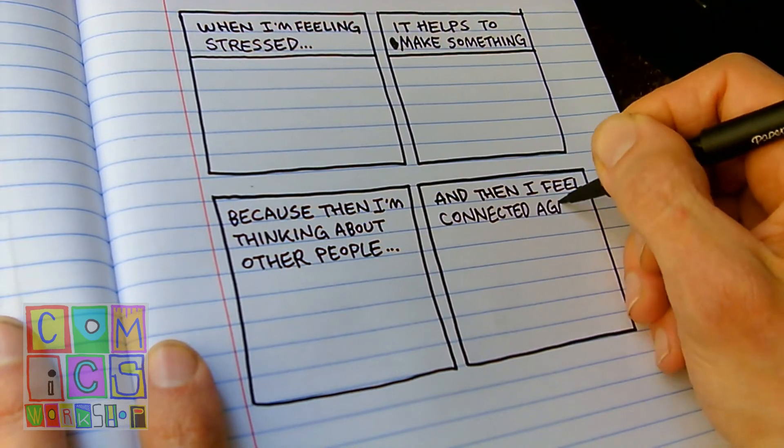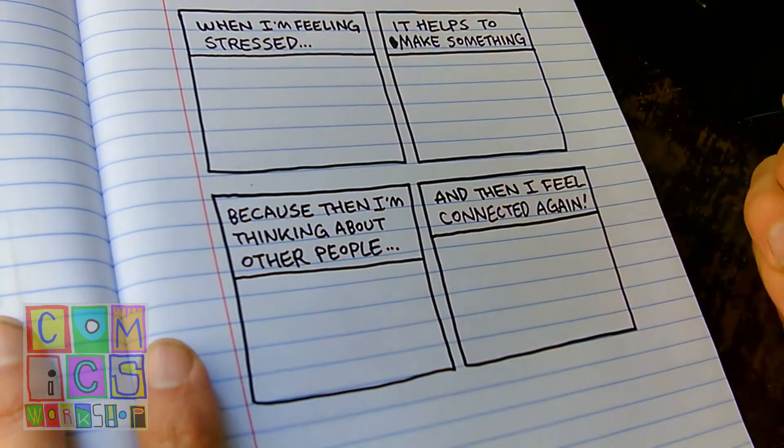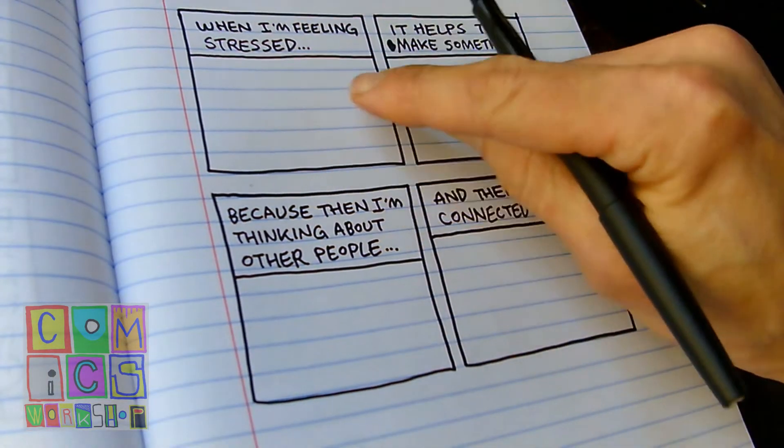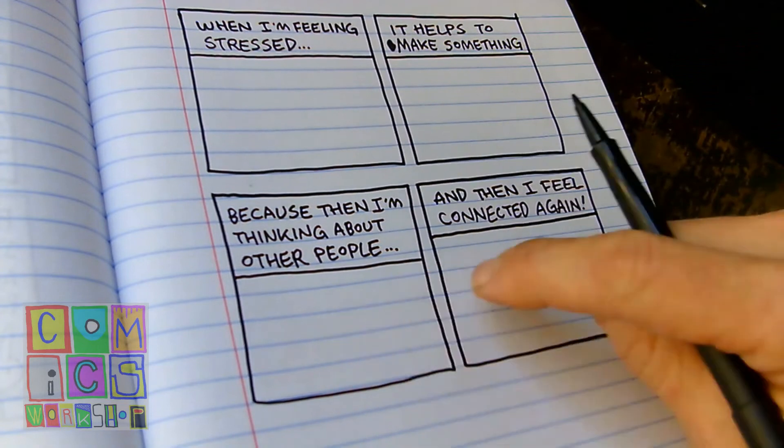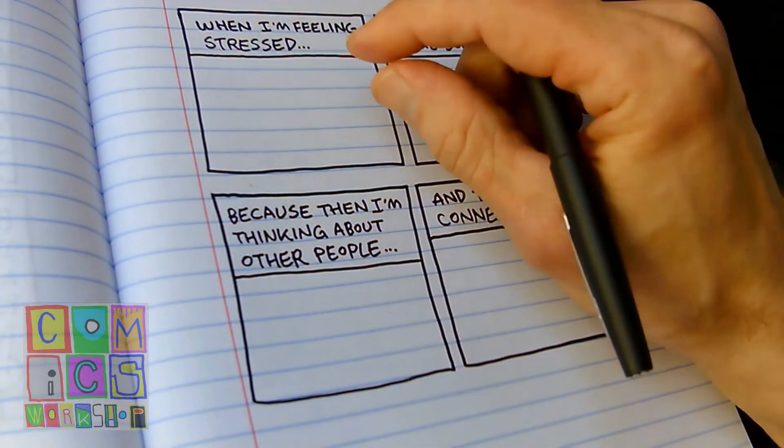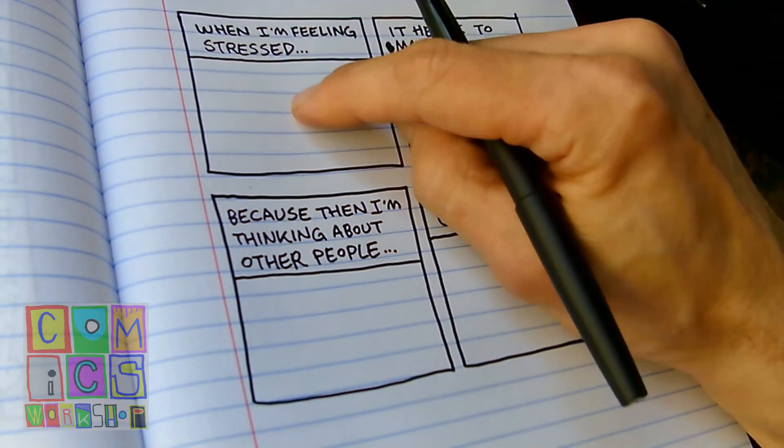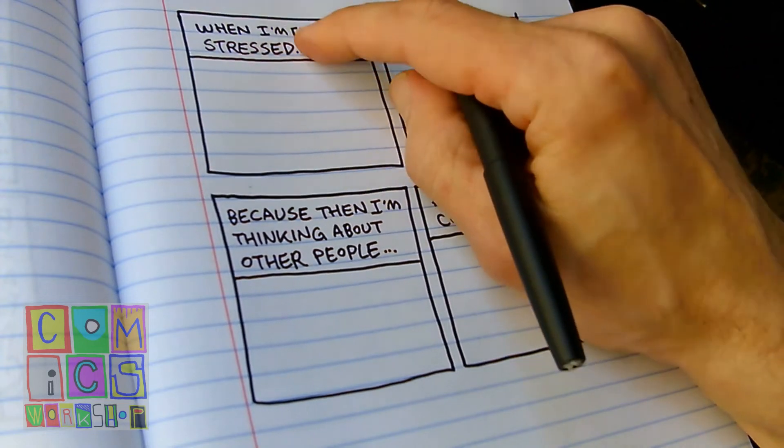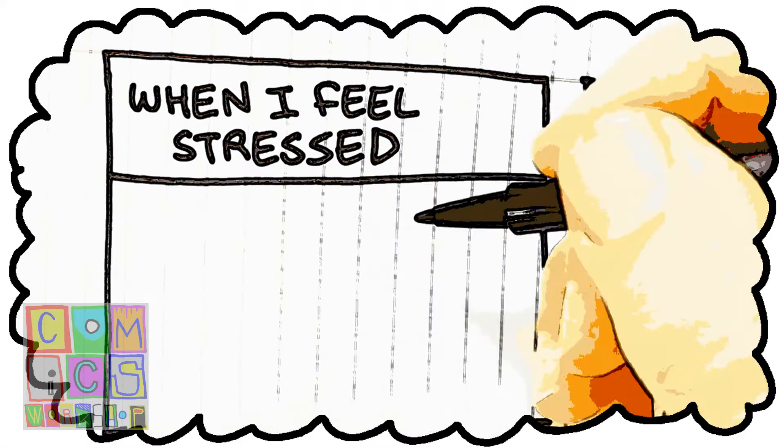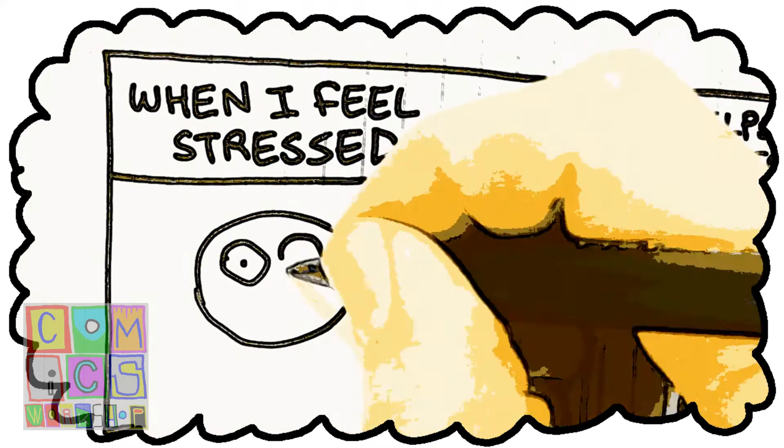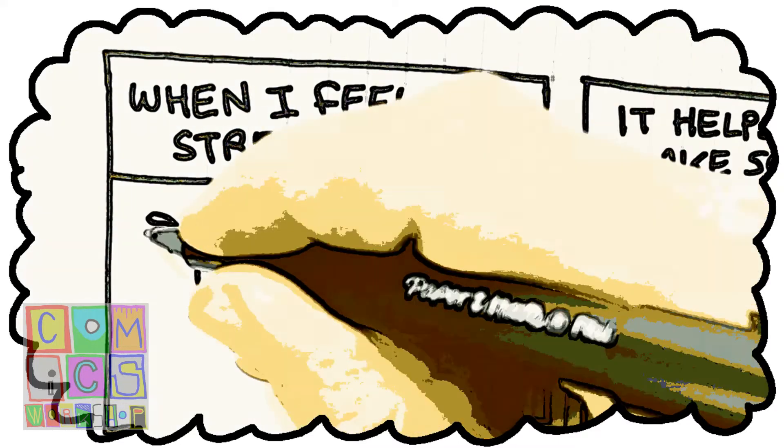Just one little thought fed through four boxes. So now I'm going to draw something in each of these boxes. What I'm going to draw, it's going to go with the words, but it's not going to be exactly the words. I mean I could draw myself feeling stressed, sure, but then that's the same picture as the words are telling us. That's too much stress.